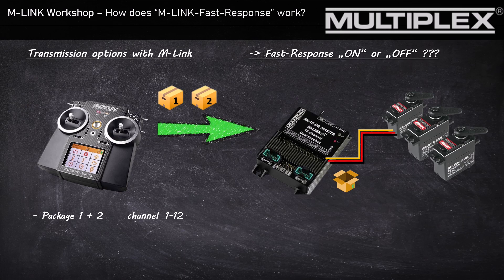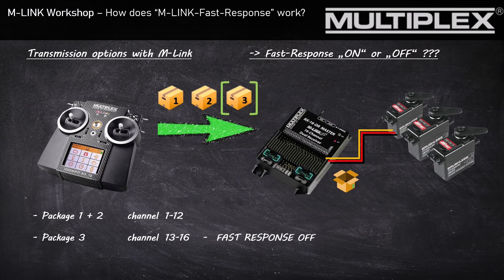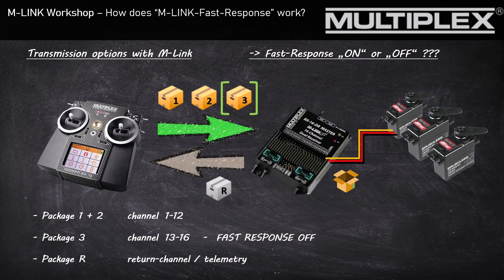In data package 3 — which you only have if you have deactivated Fast Response — are the information for servo channels 13 to 16. There is also a return channel, which is responsible for your telemetry. The benefit of only having 12 channels is what we'll explore on the next slide.